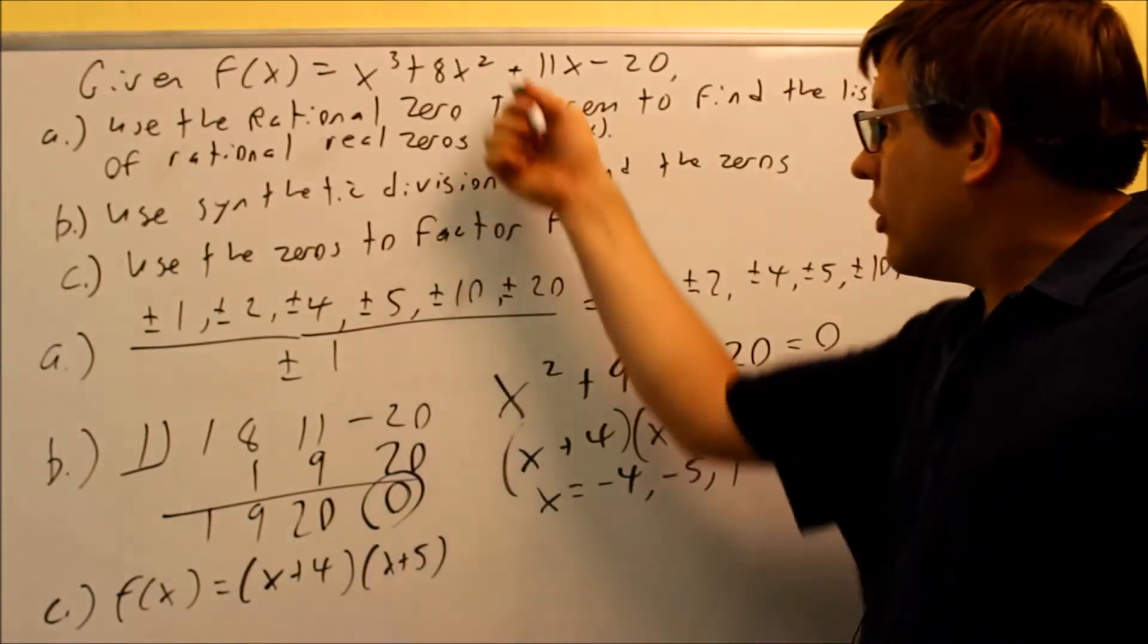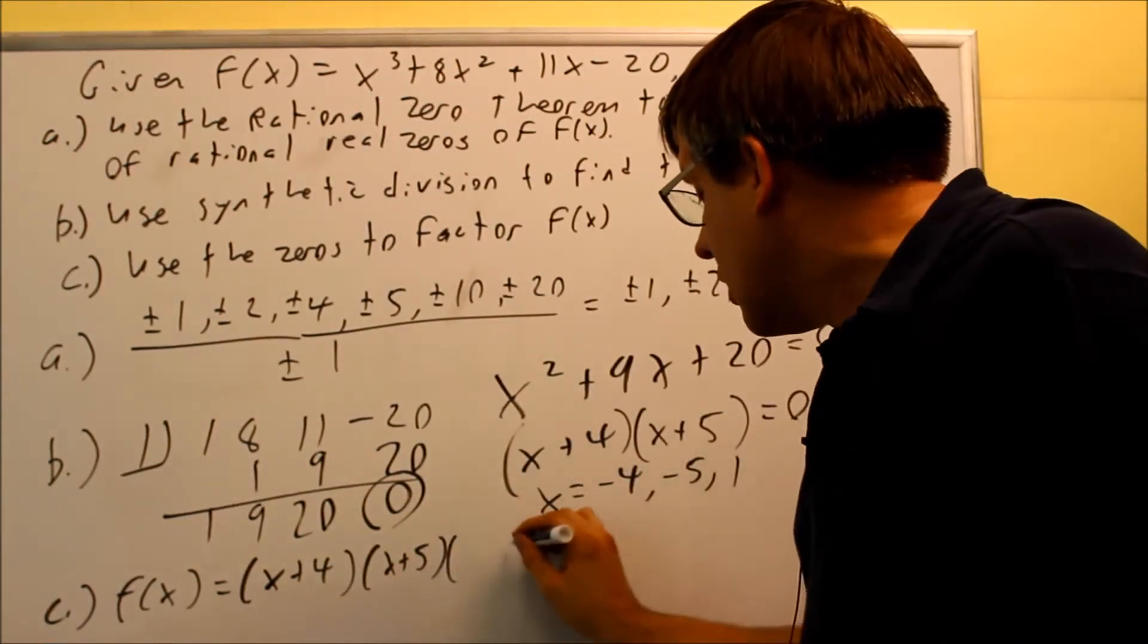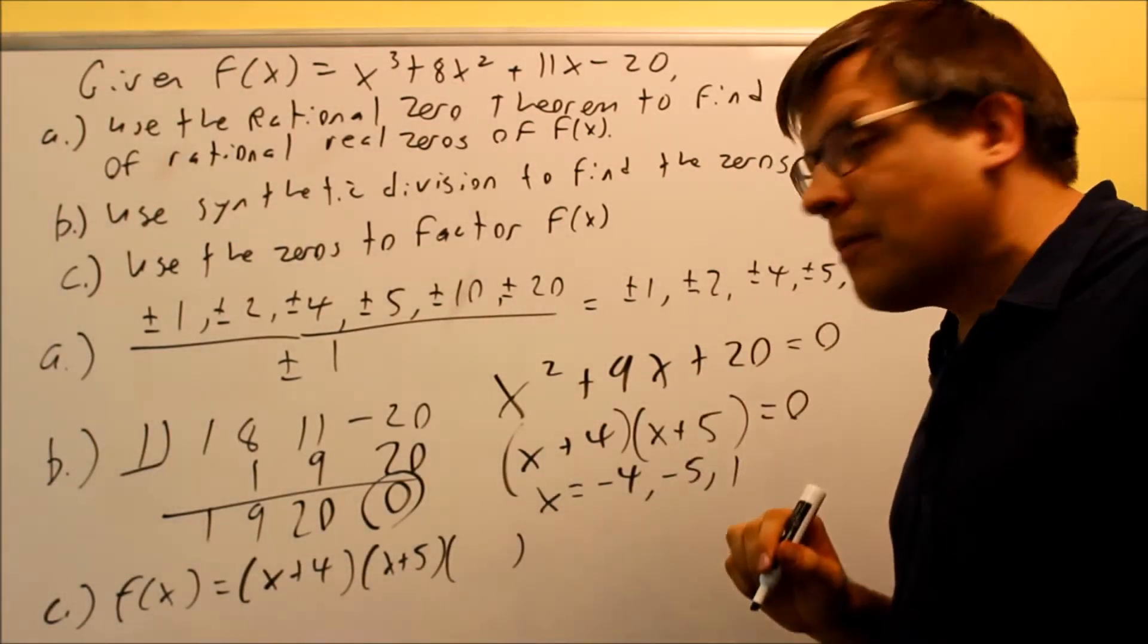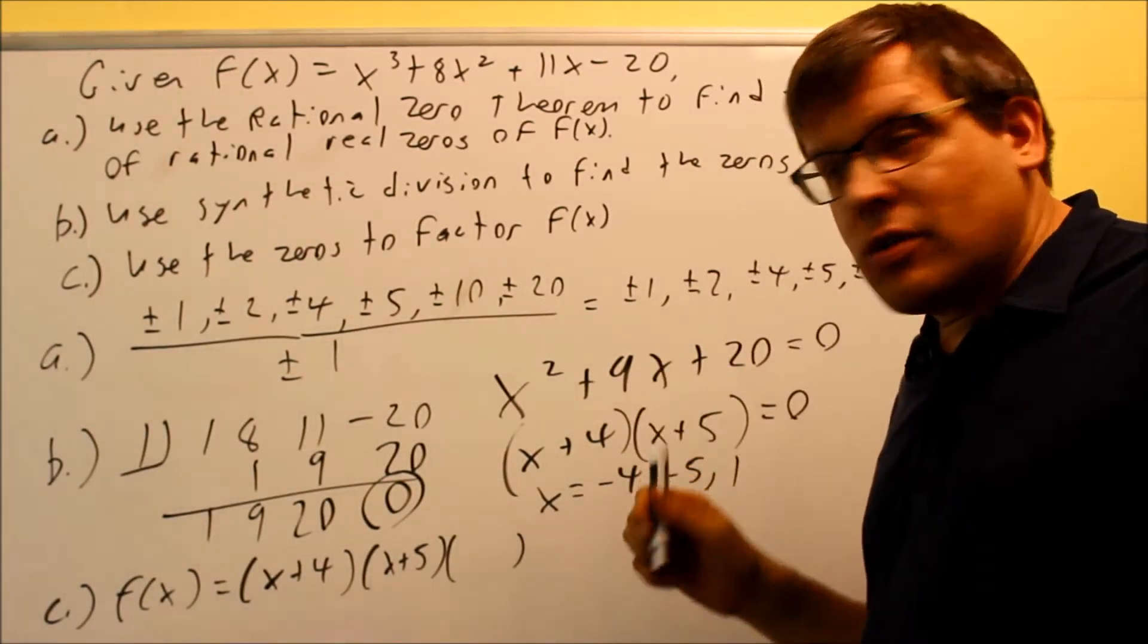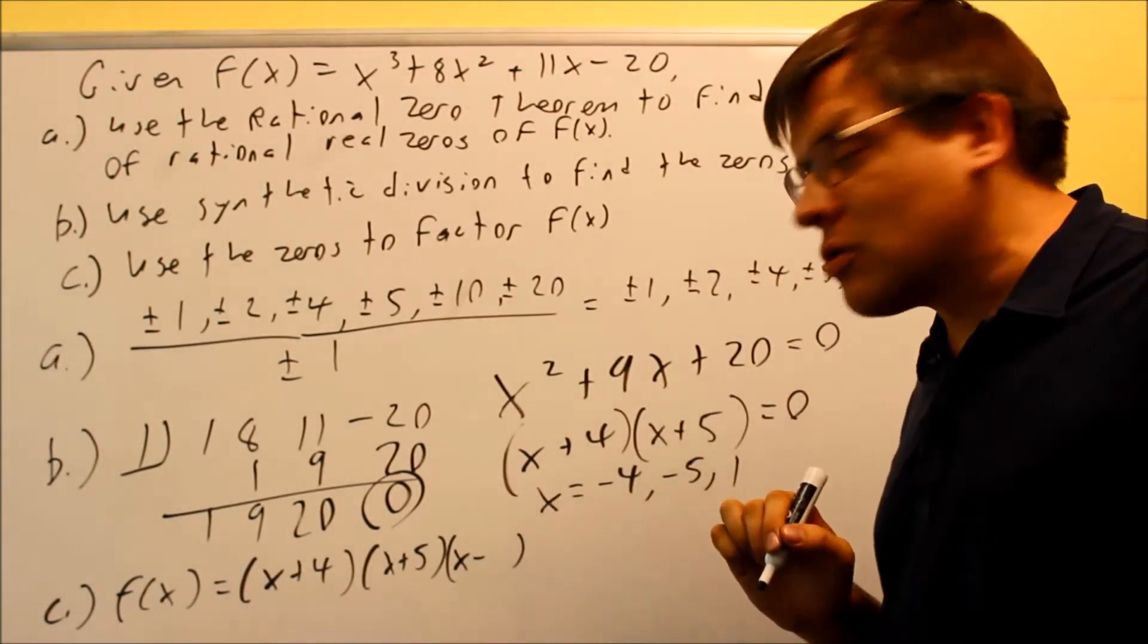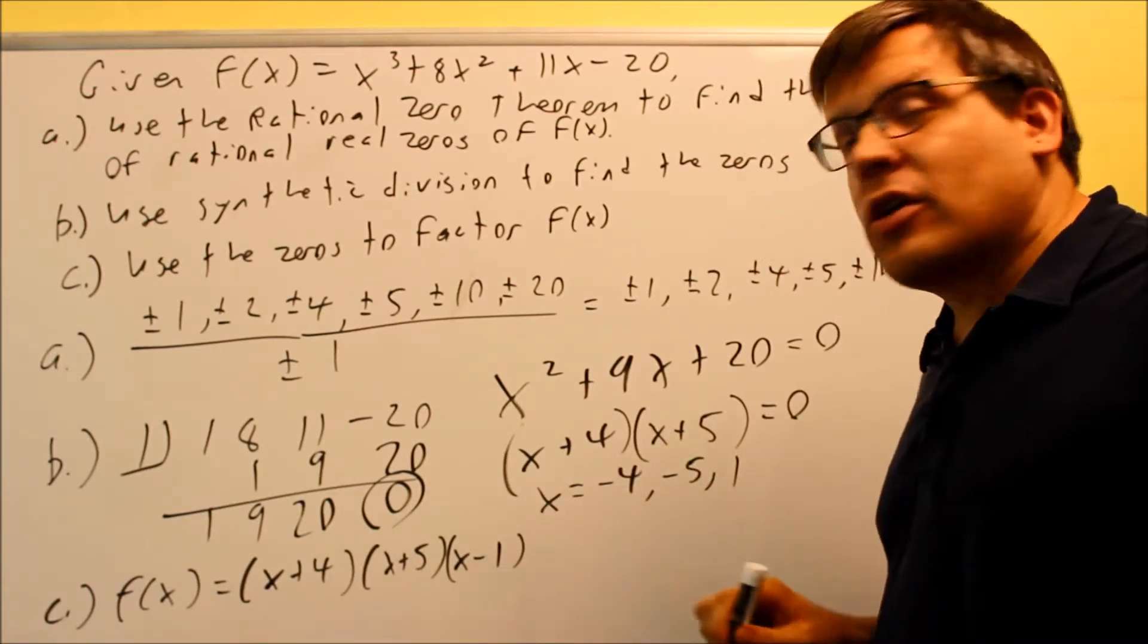However this doesn't multiply to make x cubed on there. We need to have one more piece. So remember what we talked about before, when you want to create a factor from an x intercept you always want to do x minus whatever that zero happens to be. So the other answer I got was one. So now we're going to put x minus one in there.